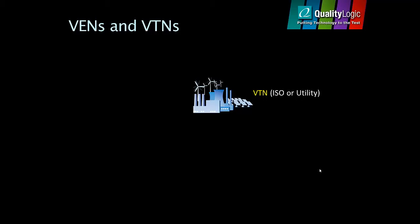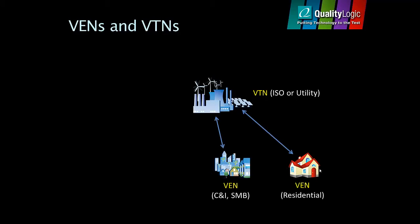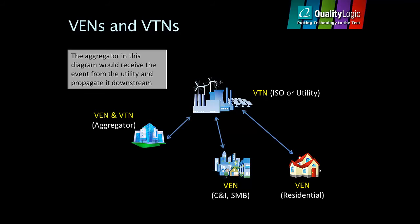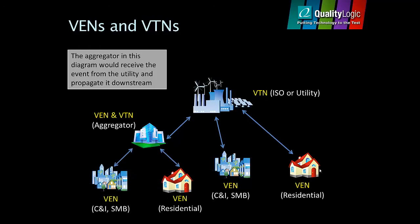A typical interaction pattern would have the utility playing the role of VTN, communicating with a residence or small business playing the role of VENs. Or, perhaps the utility playing the role of VTN would first communicate with an aggregator, playing the role of a VEN, who would switch hats, becoming a VTN, in order to propagate events downstream to other commercial or residential resources playing the role of VENs.